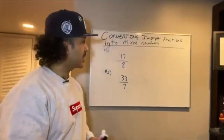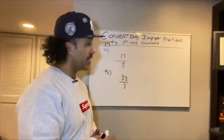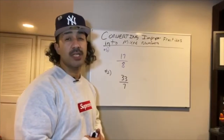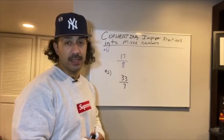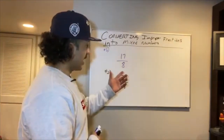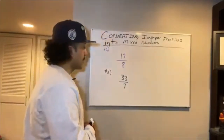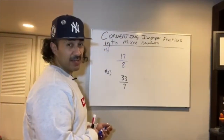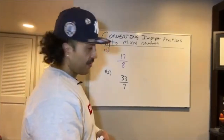Today we'll be discussing converting improper fractions into mixed numbers. What is an improper fraction? An improper fraction is any fraction in which the numerator is greater than the denominator. For our first example, we have 17 over 8, or 17 eighths. Step 1 is to divide the numerator by the denominator and see what we get.